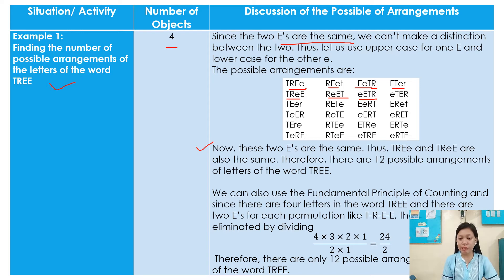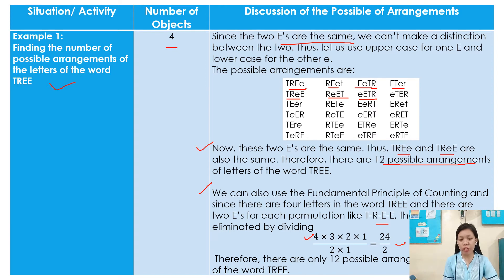Since these two E's are the same, the duplicates are also the same. Therefore there are 12 possible arrangements of the letters of the word THREE. We can also use the fundamental principle of counting. Since there are 4 letters in the word THREE and there are 2 E's, the duplication is eliminated by dividing: 4 × 3 × 2 × 1 = 24, divided by 2 × 1 for the two E's, which equals 2. So the answer is 24 divided by 2, giving us 12 possible arrangements.